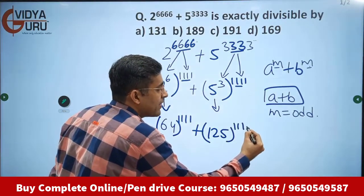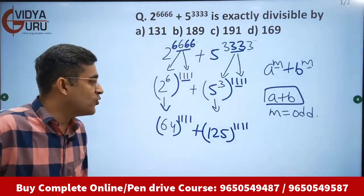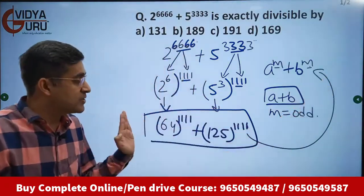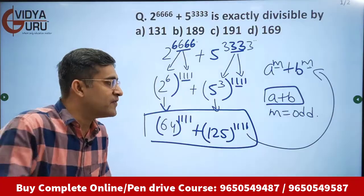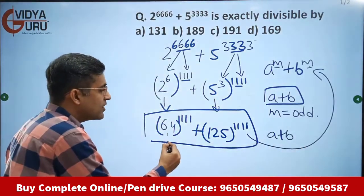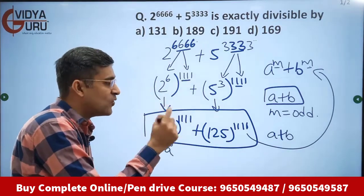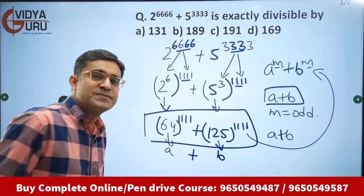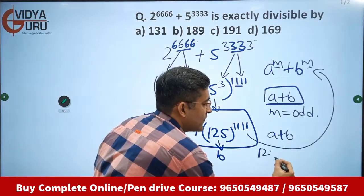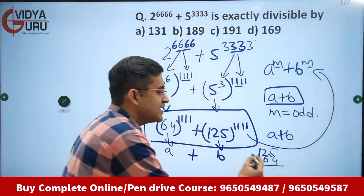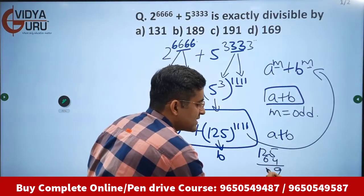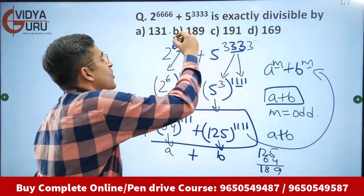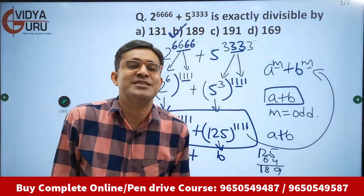So now we have 64 raised to power four times one plus 125 raised to power four times one — the particular form I was talking about. This expression will be divisible by a plus b. Here a is 64 and b is 125, so a plus b is 125 plus 64 which equals 189. This expression is completely divisible by 189, so option B is the answer.